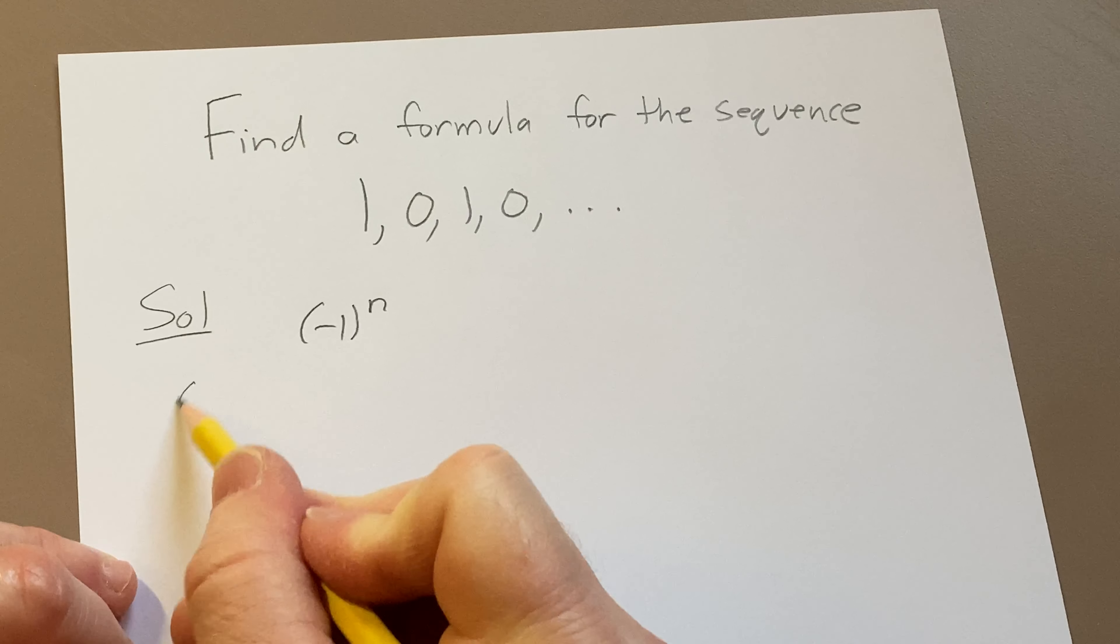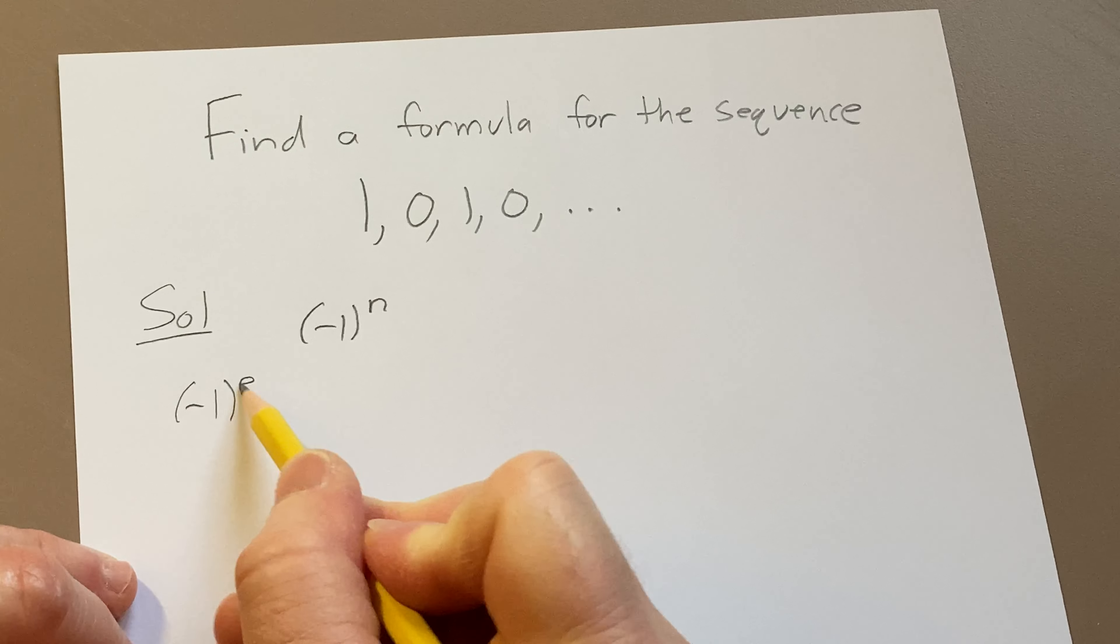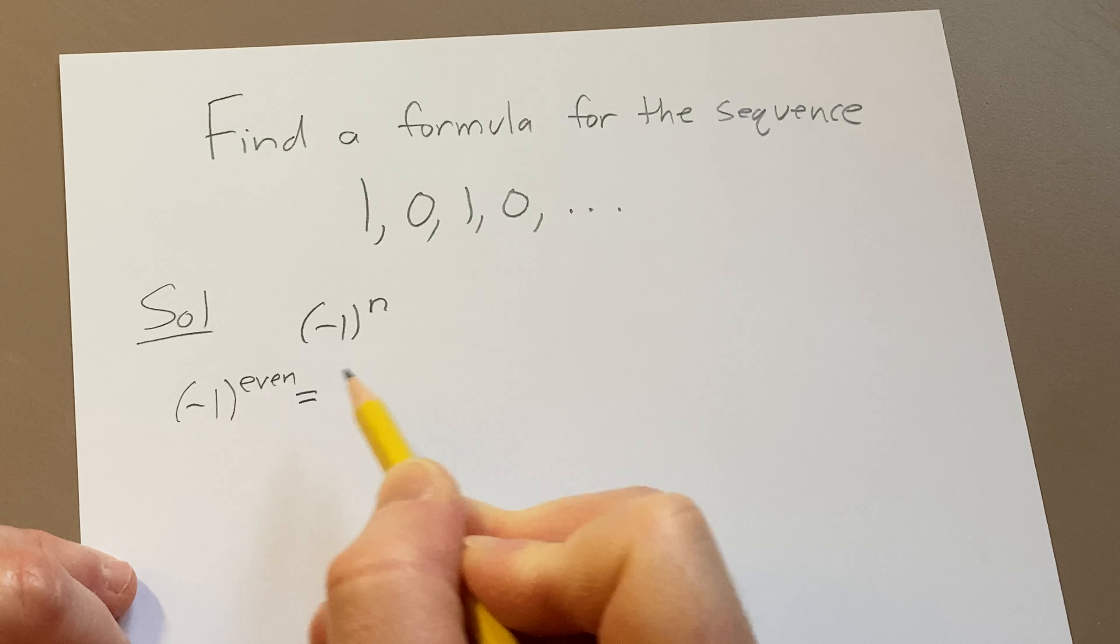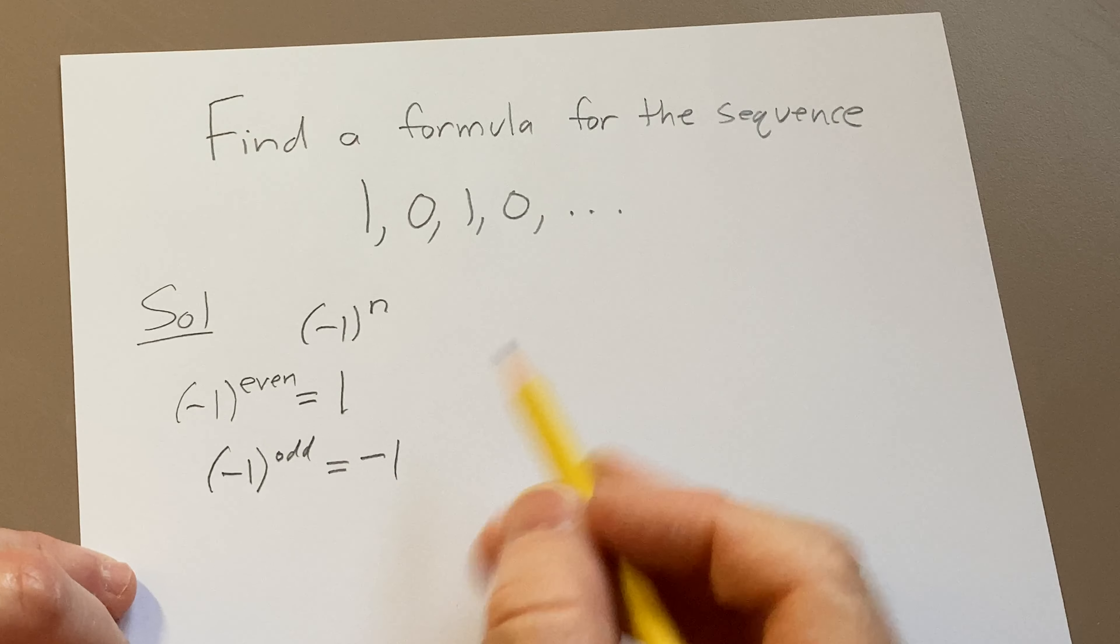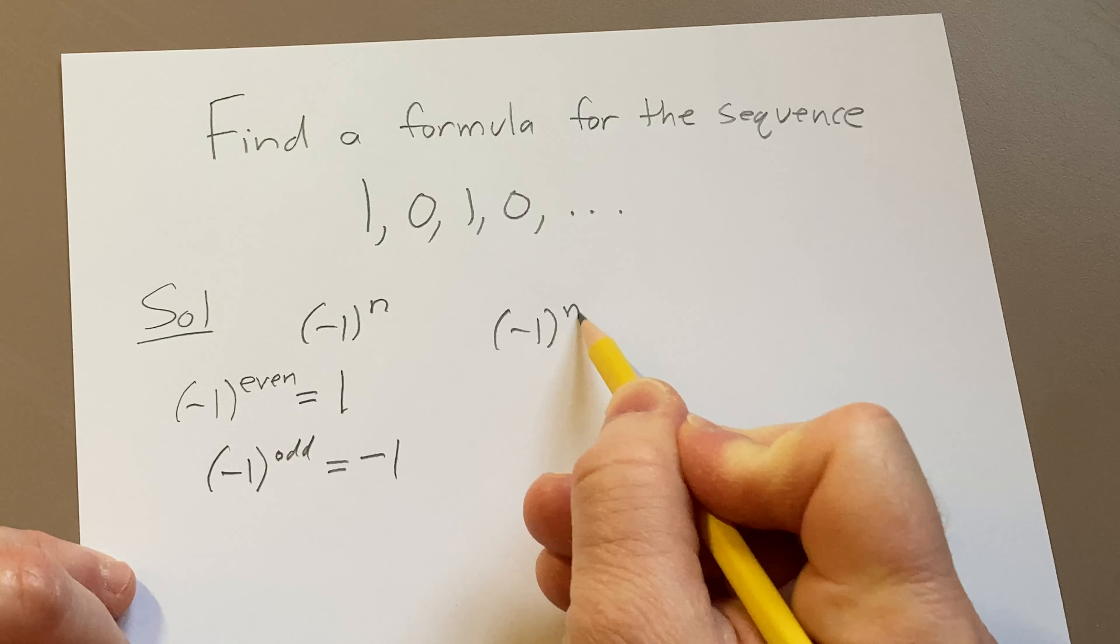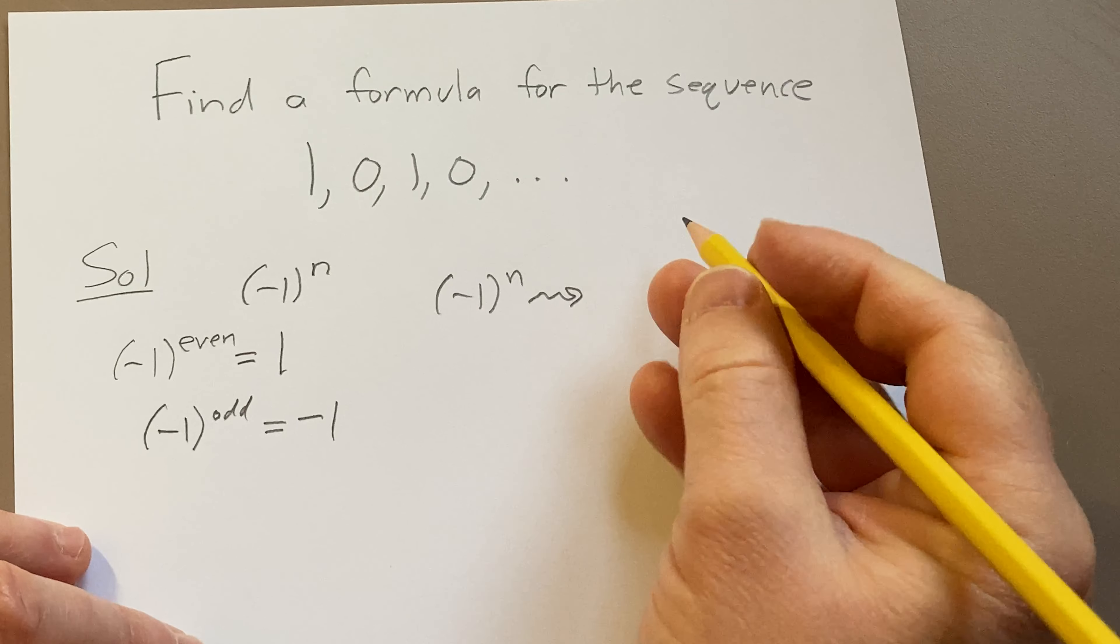So this sequence is special because whenever the exponent is even, you're going to get 1, and whenever the exponent is odd, you're going to get -1. So if you have (-1)^n, it's going to give rise to the following terms.